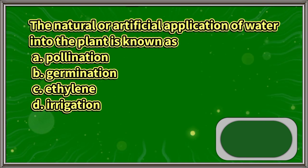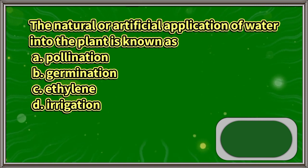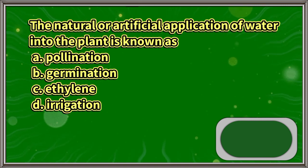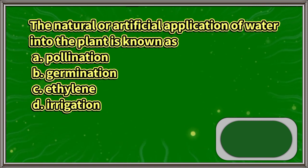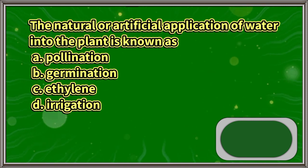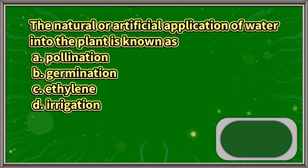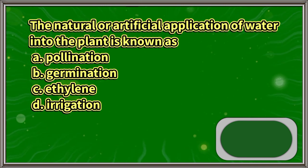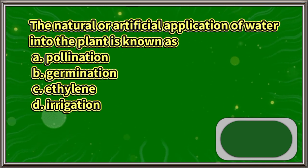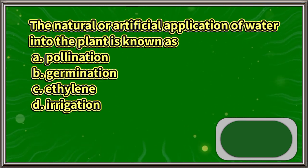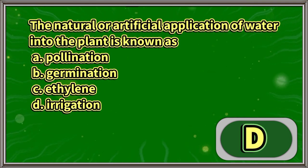The natural or artificial application of water into the plant is known as: A. Pollination. B. Germination. C. Ethylene. D. Irrigation. The answer is letter D.